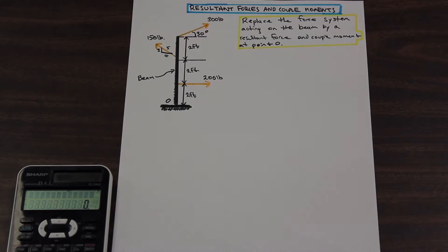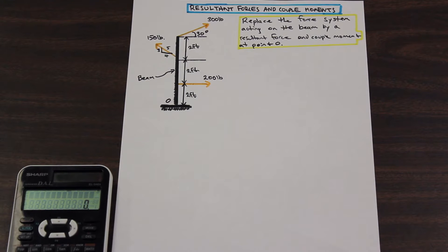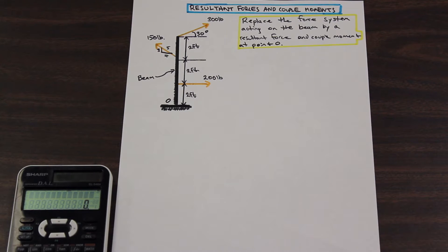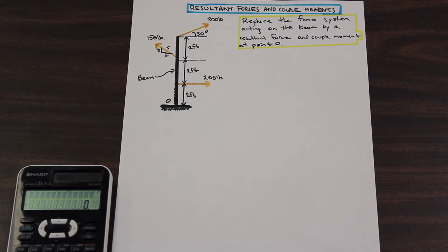Hi guys, Fred here, KF Math and Engineering. We are going to talk about systems of forces today and how we can take a system — perhaps a beam or a post — with multiple forces acting on it and translate all of those forces into a single moment and a resultant force. That is the goal of this question here.